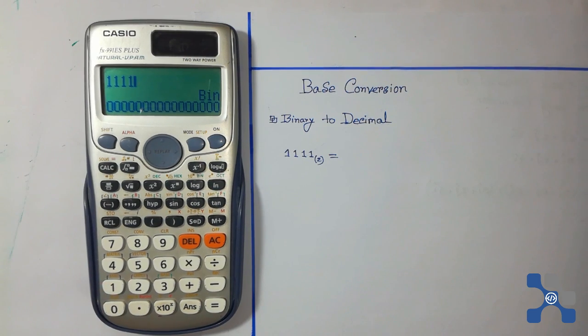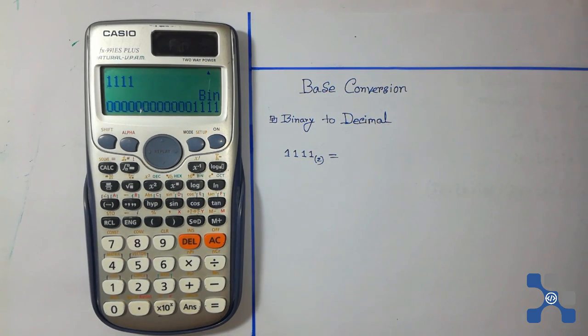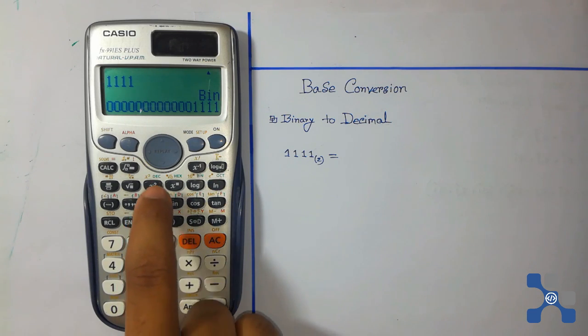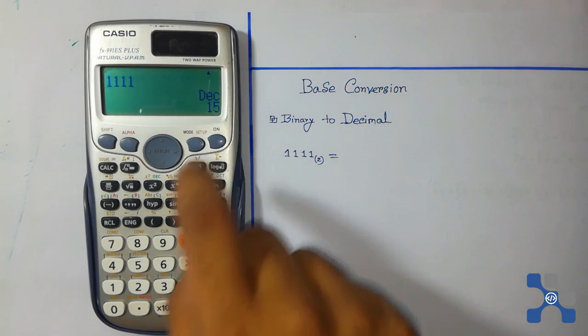And then press the equal button. Okay, and now we convert it into decimal, so we need to press this button, X square. Press this button. We see that decimal equals 15.